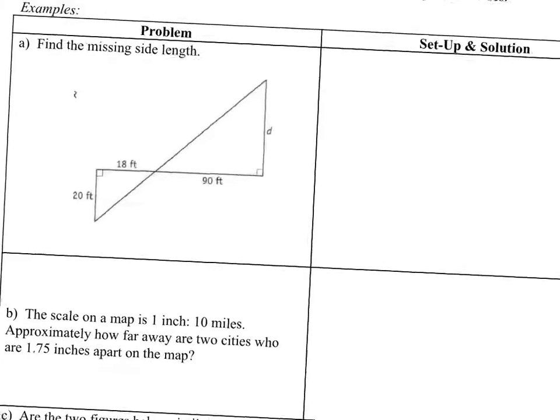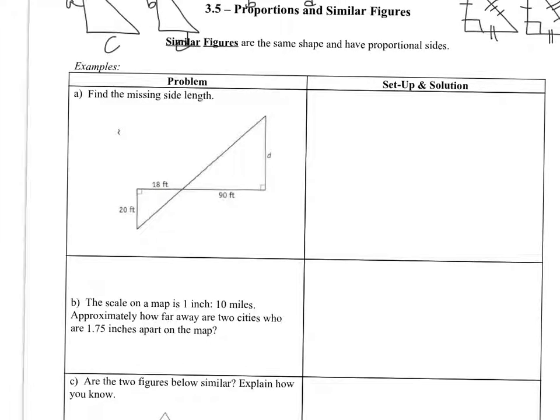So to find the missing side right here, we're going to set up a proportion. So we're going to do 20 is to 18 as D is to 90. So 18 and 90 are in corresponding positions. That's why they're both on the bottom. They could also both be on the top. And then 20 and D are in corresponding positions. So there's different ways that you could set up. I could have went 20 is to D as 18 is to 90.